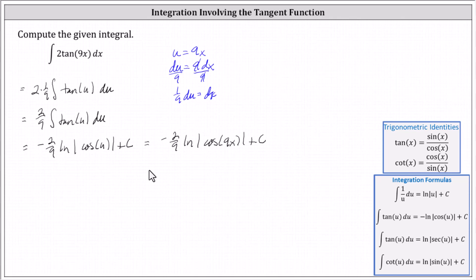And again, if we were to use the second integration formula, we could also express the antiderivative as positive two ninths times natural log absolute value of secant nine x plus c. I hope you found this helpful.